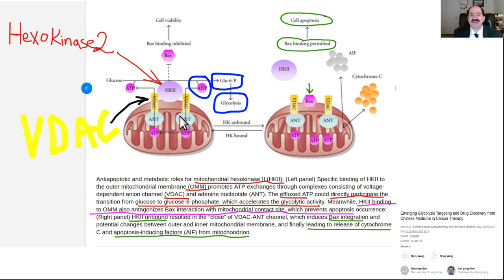There will still be some mitochondria making a little ATP — some Krebs cycle, some oxidative phosphorylation. Normally 90% of ATP comes from mitochondria; in a cancer cell it might only be 5%. But HK2 positions itself right on the mitochondria membrane to suck whatever little ATP does come off, getting first dibs on it to phosphorylate glucose.